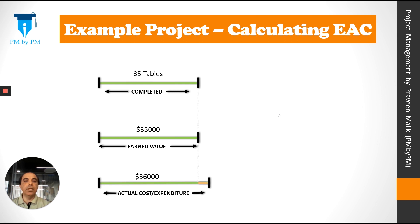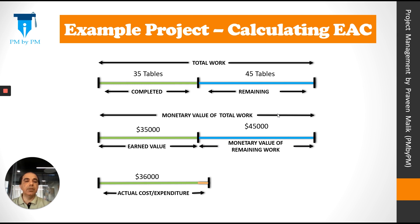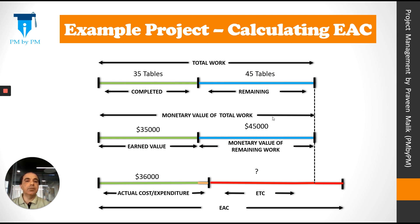We have spent more than the budgeted amount. Now we have to build 45 more tables to complete the project scope; the monetary value for these 45 tables is $45,000, and our original budget was $80,000. We need to spend some more money to complete the remaining work, expressed as ETC. ETC could be less than, equal to, or more than $45,000. Most likely we will spend more than $45,000 since we are not making good progress, so our EAC is likely to be more than $80,000.